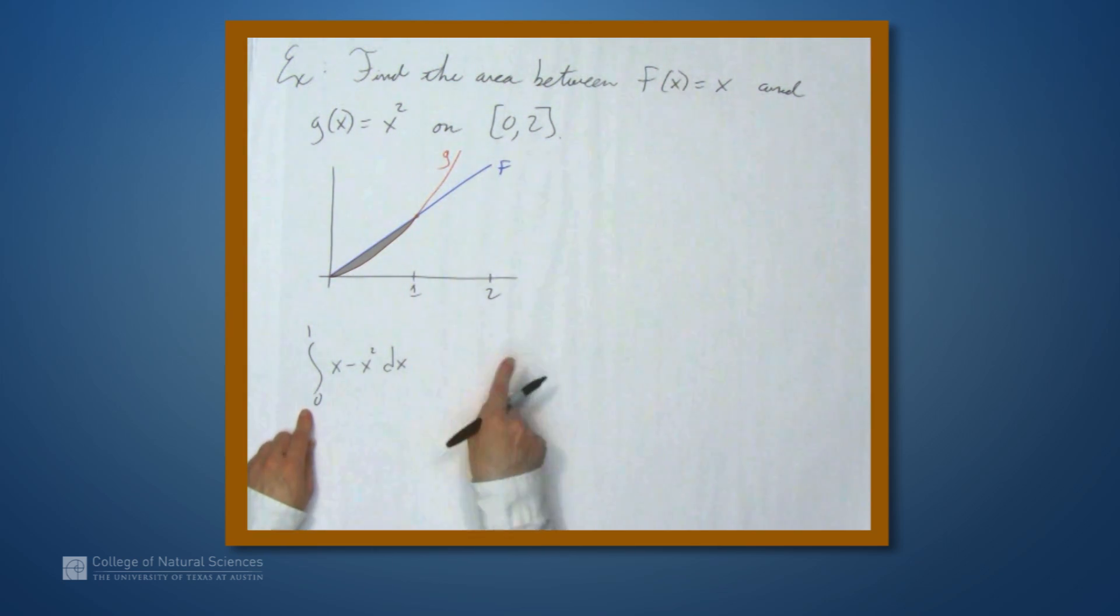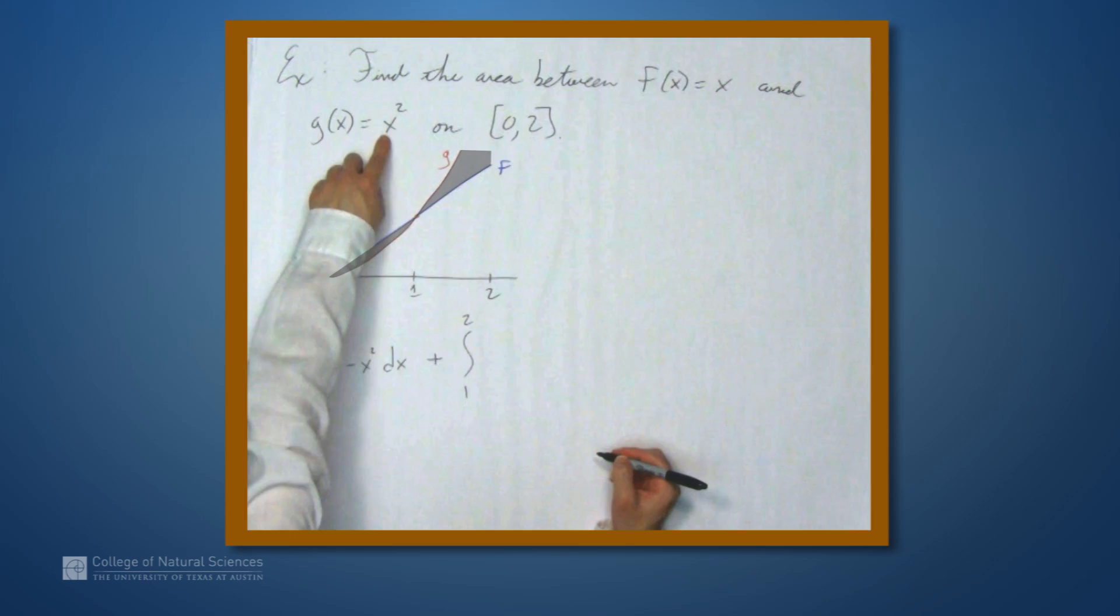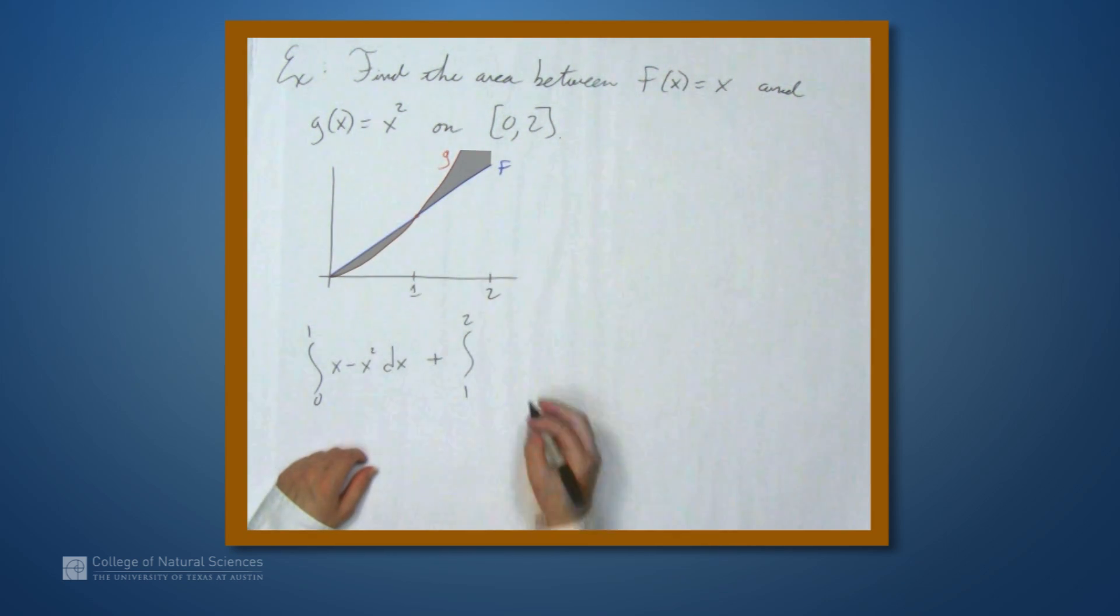And we already know what this is. We did the work in the previous example. But to this integral, we need to add the integral from 1 to 2. And on this interval, x squared is bigger than x. So we're going to subtract x from x squared dx.